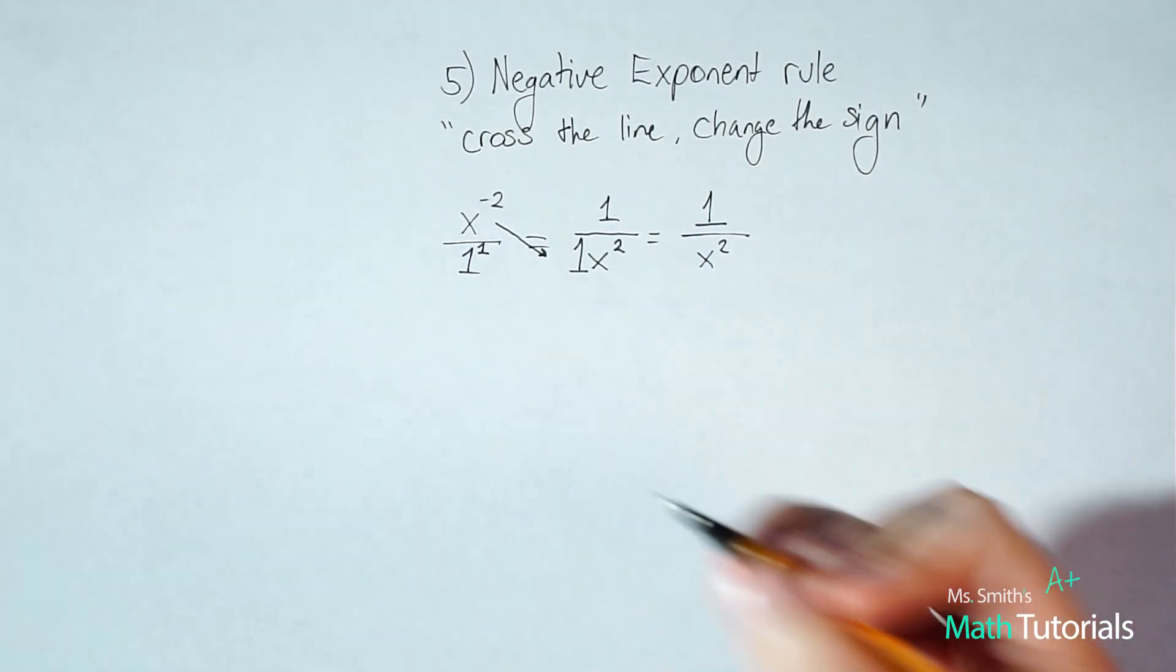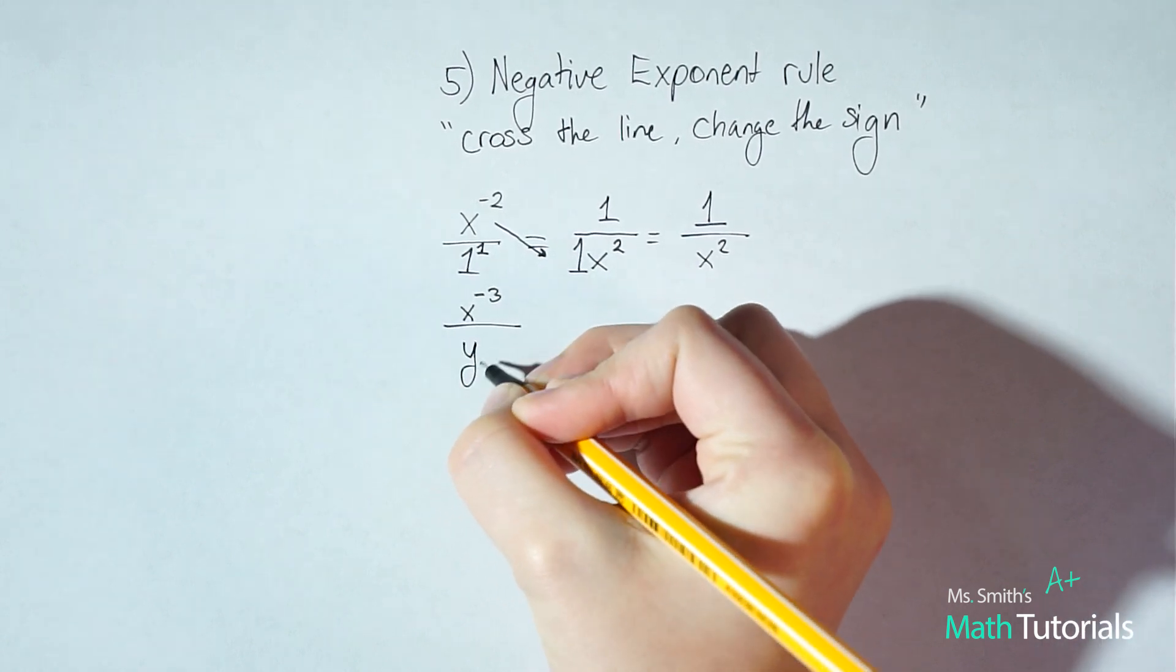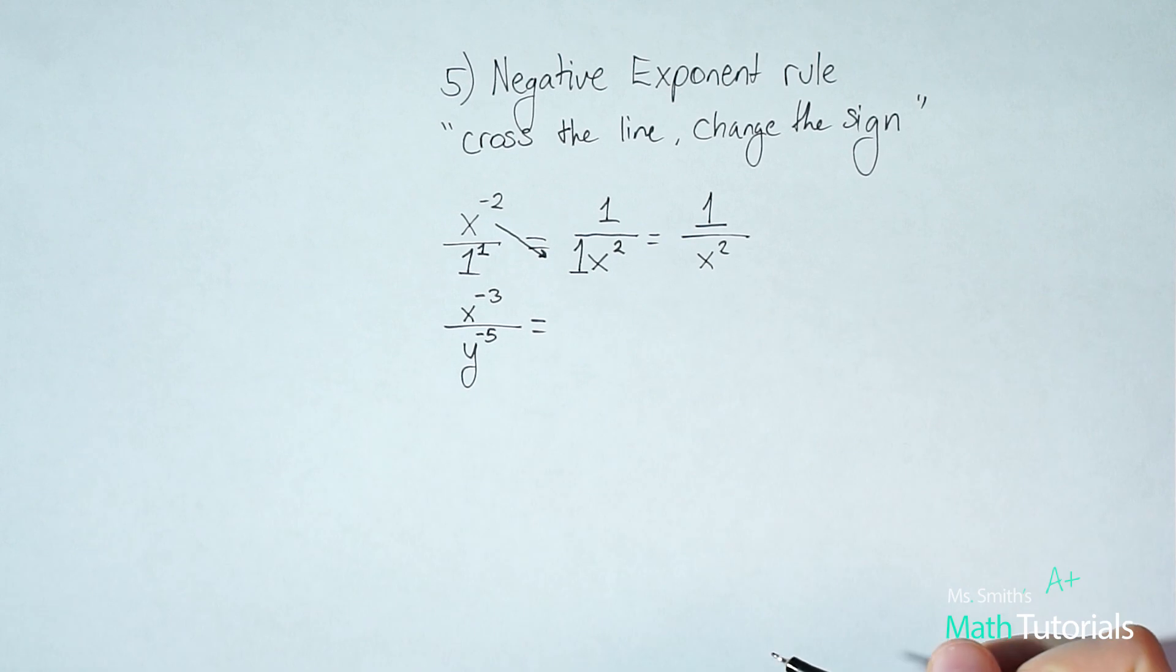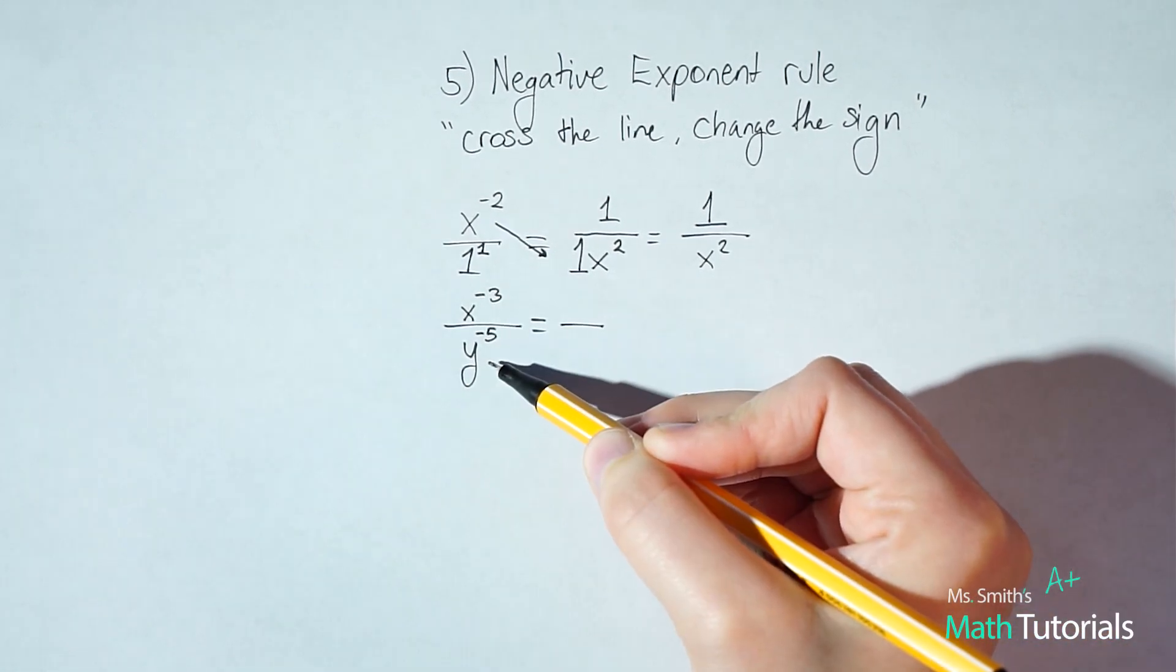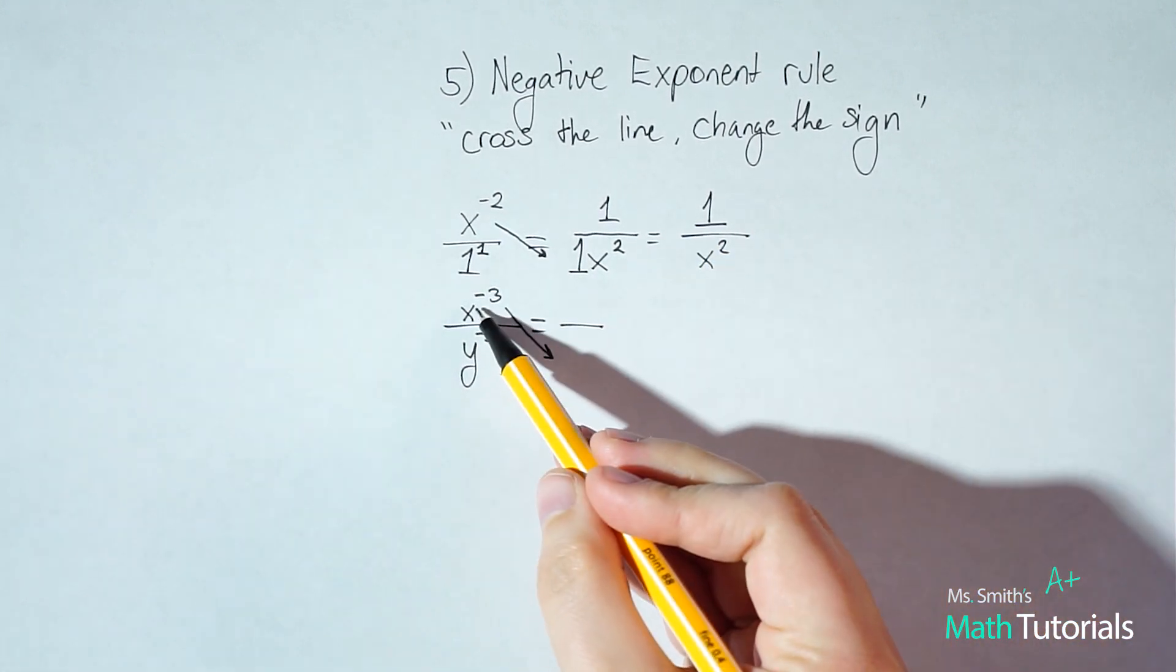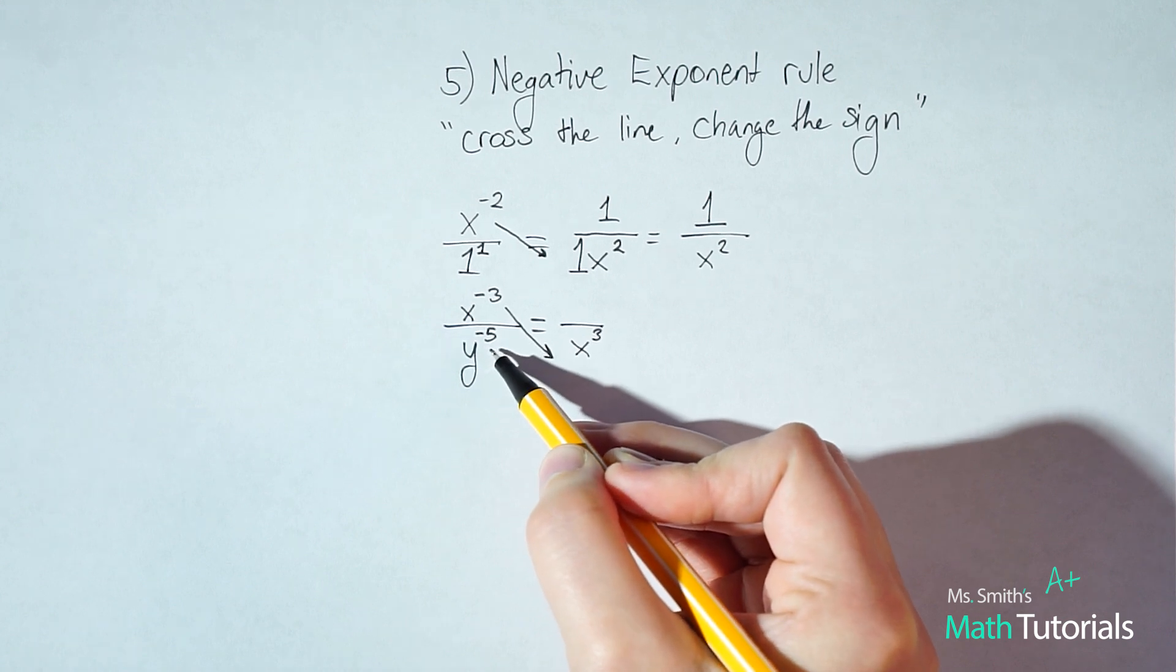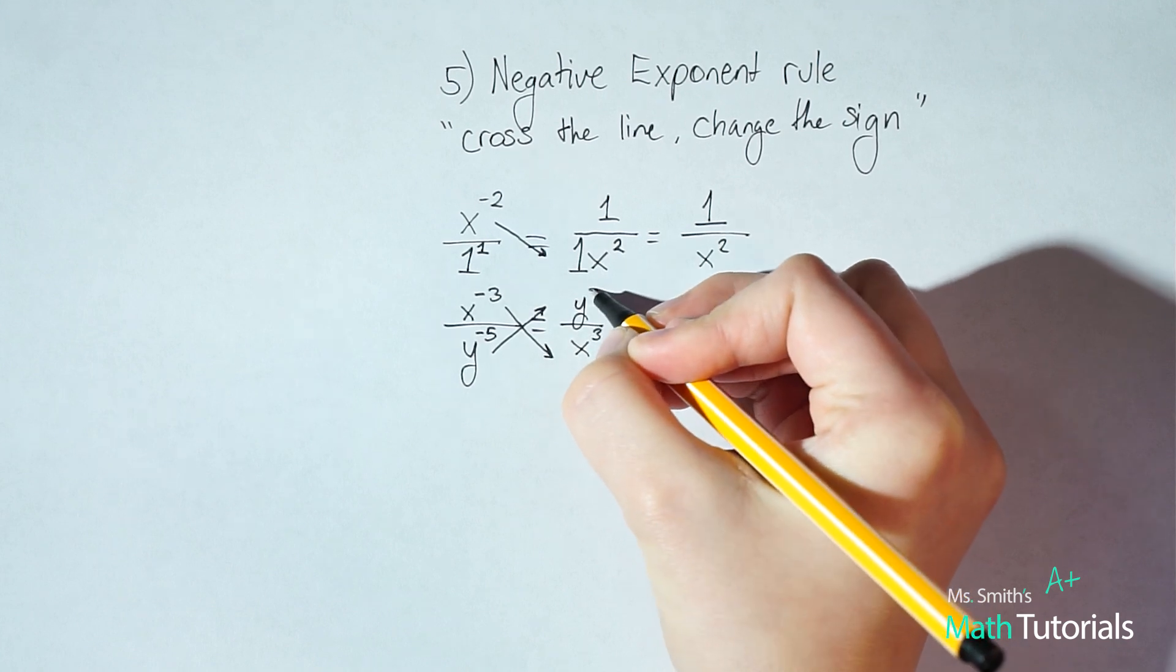The next example we would look at is we might have multiple variables. So we could have x to the negative three over y to the negative fifth. Now in this case, we've got two separate variables, both with negative exponents. So that's okay. And these two are actually already in fraction form, so I don't need to turn it into a fraction. Rather, I'm just going to go ahead and cross the line, change the sign with my x, so that three will become positive. And notice I've got this negative exponent down here too. So this time I will bring it up to the top. Cross the line, change the sign.